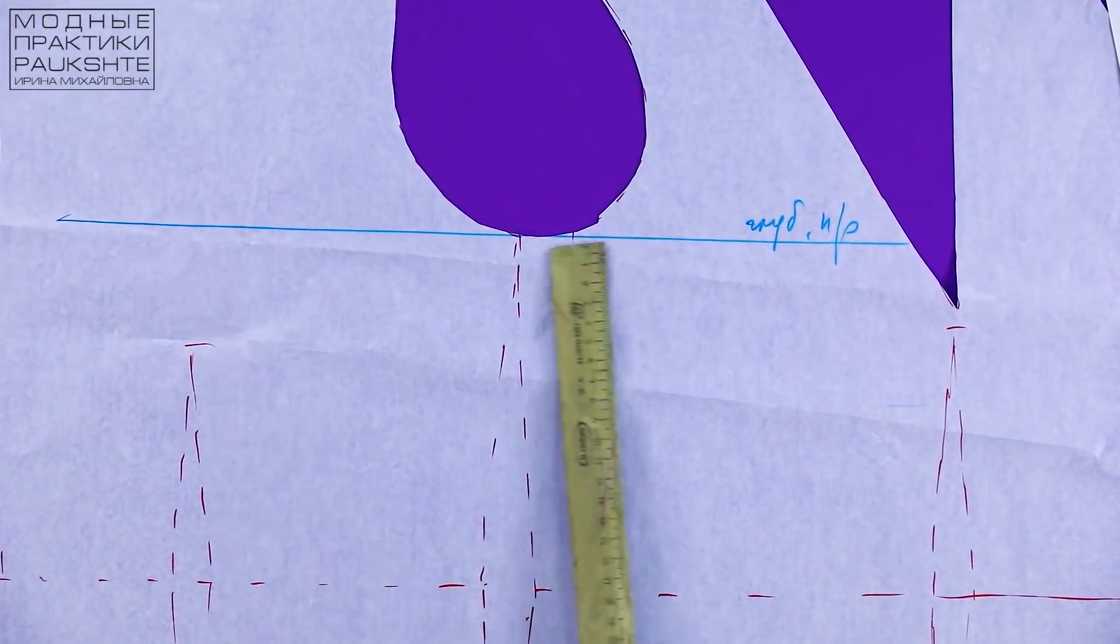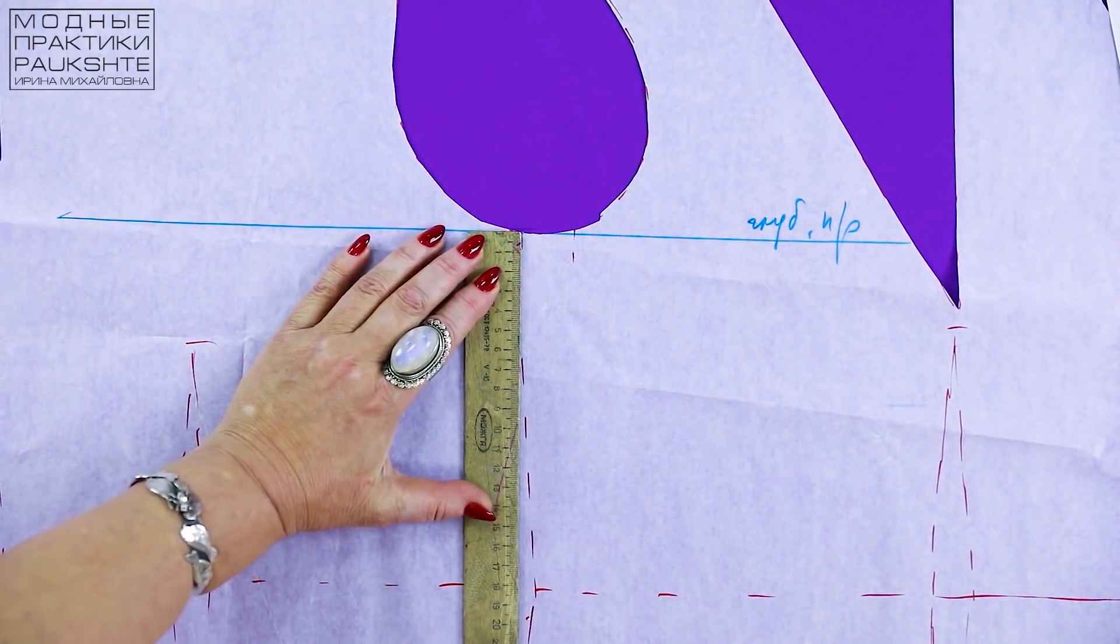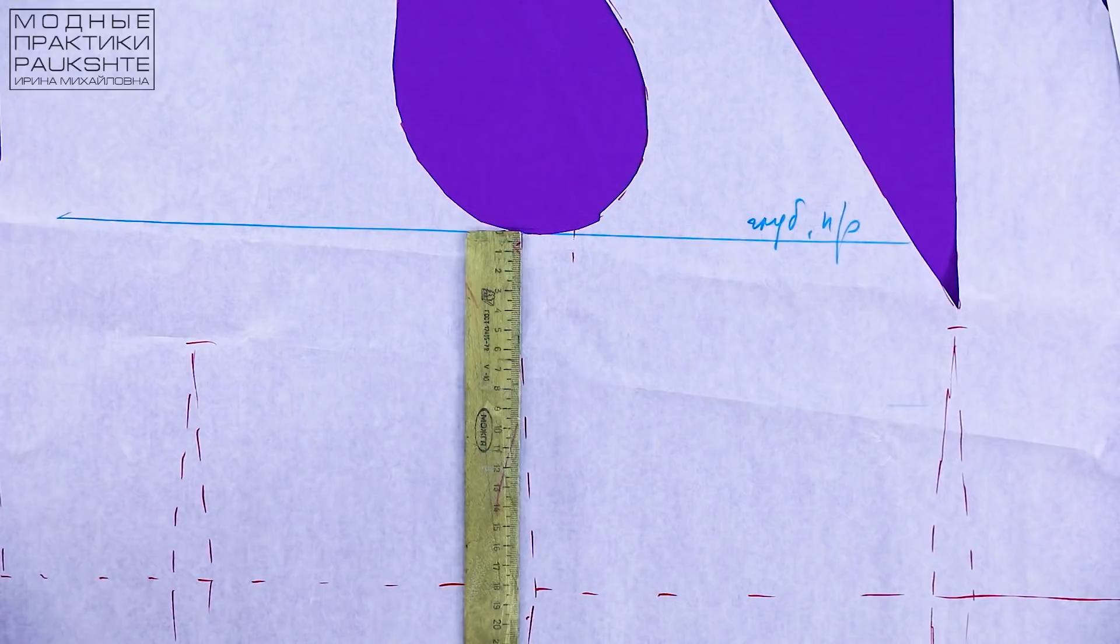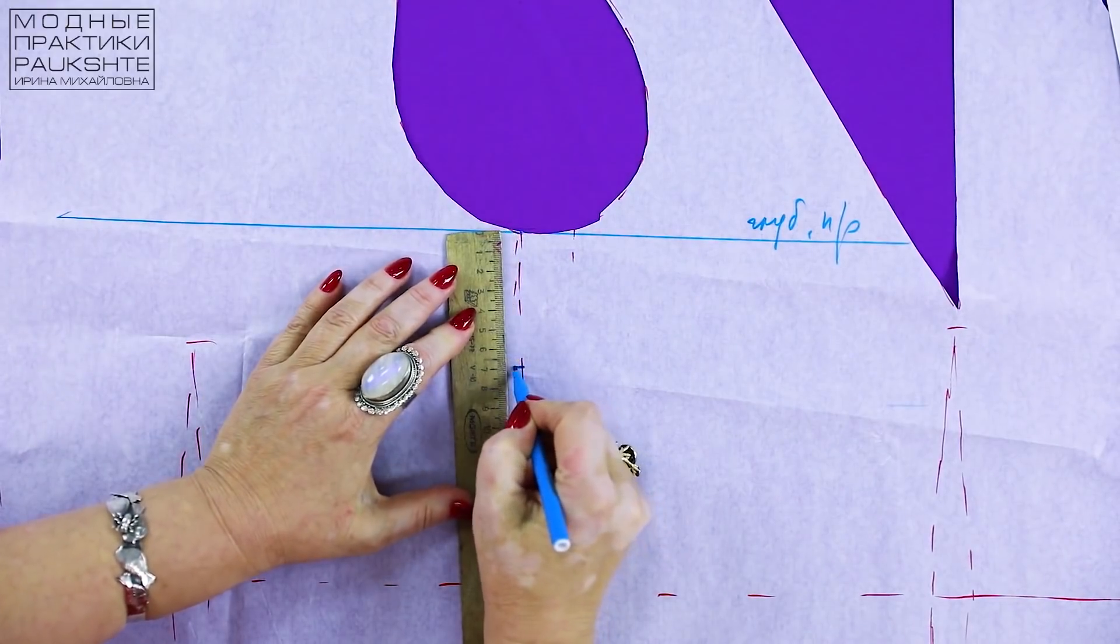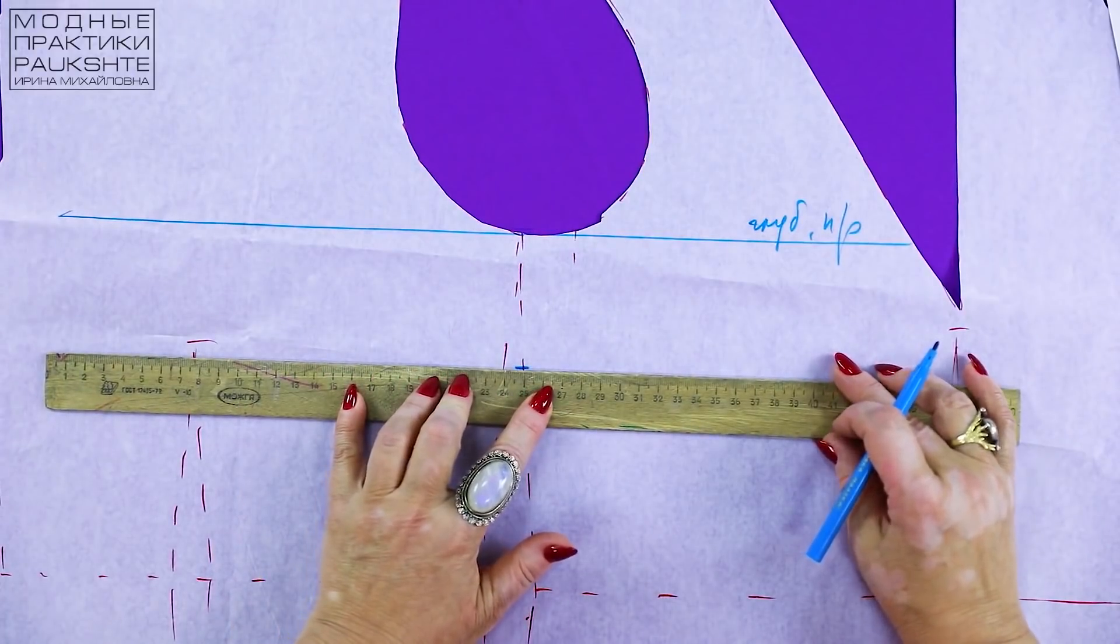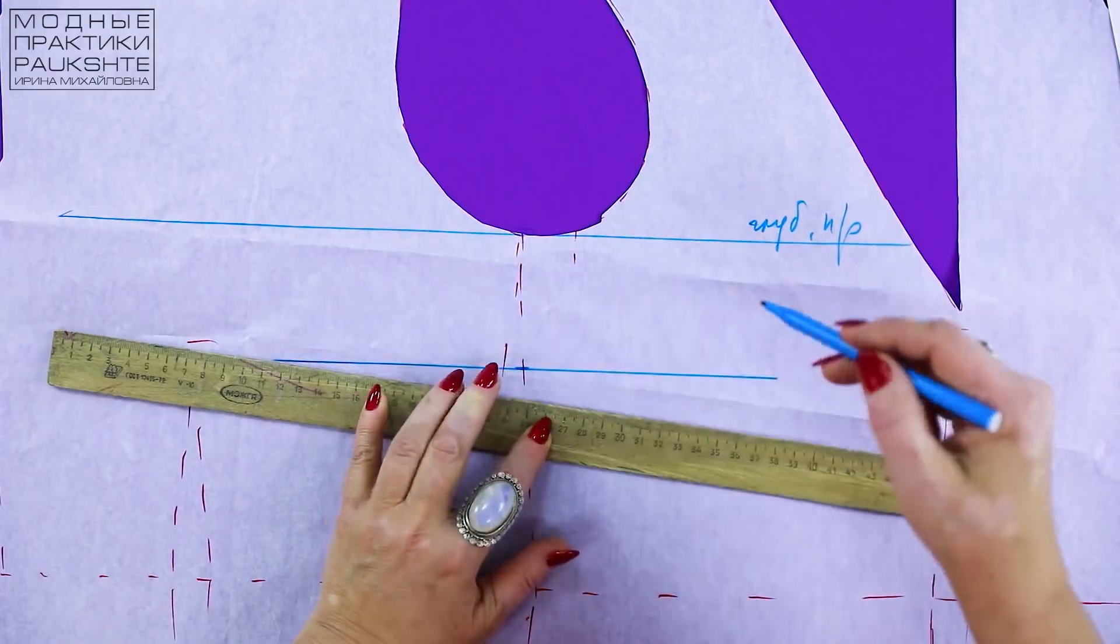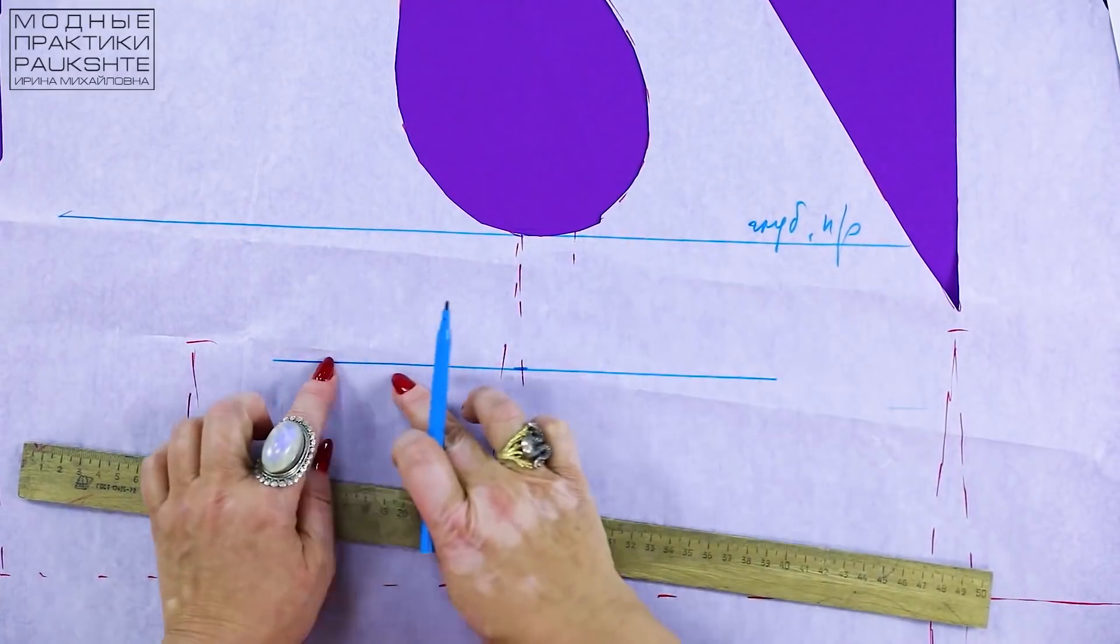I remind you that this is the armhole depth line. I measure 7 centimeters down from it. I'll show you why I do it. Measure 7 or 6 centimeters. I've come up with this number myself. Draw a line parallel to this one.